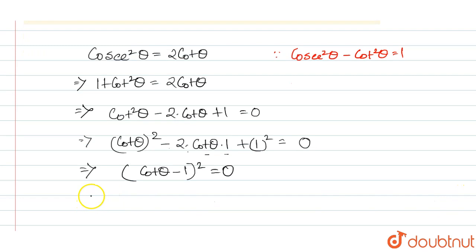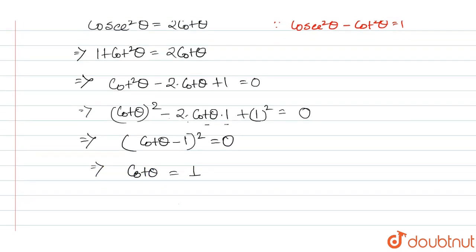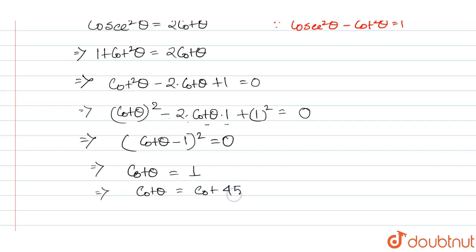So from here, cot theta equals to 1. Since cot theta equals 1, we can write this as cot of 45 degrees.